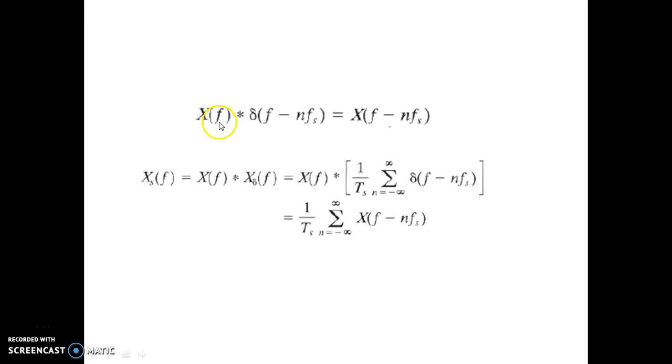And x(f) convolution delta(f - nfs)—why is it a convolution? We are multiplying in time domain x(t) into train of impulses, so naturally in frequency domain it should be a convolution, and that will give you x(f - nfs).